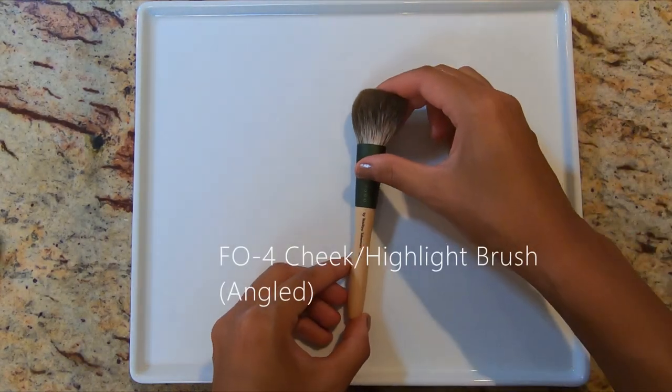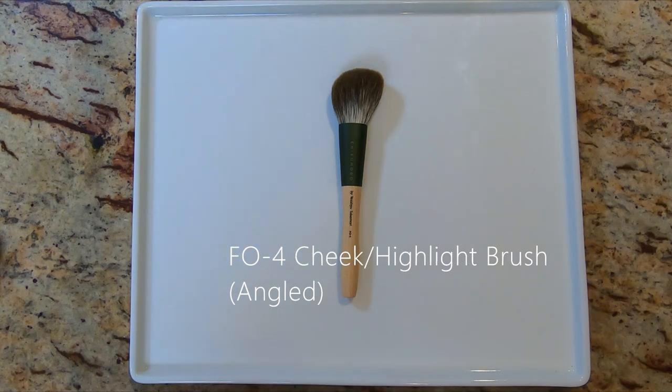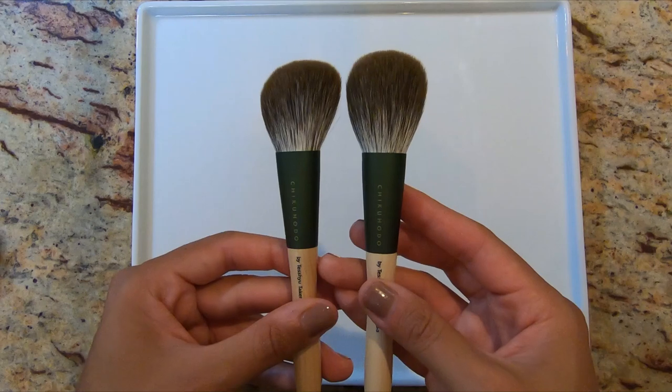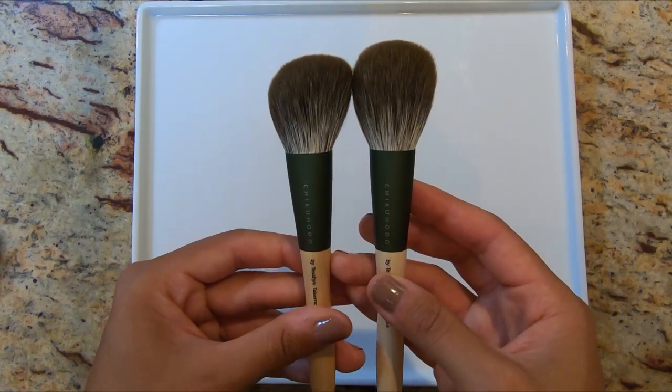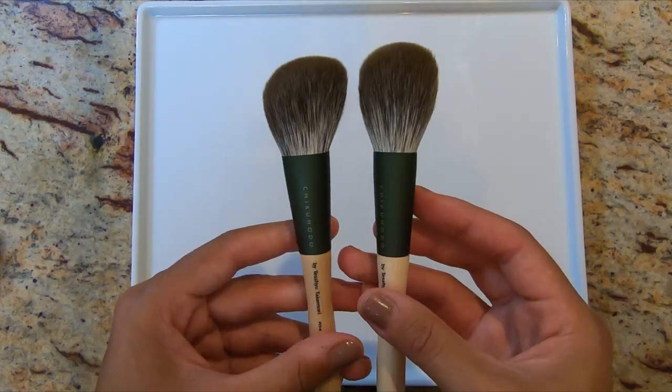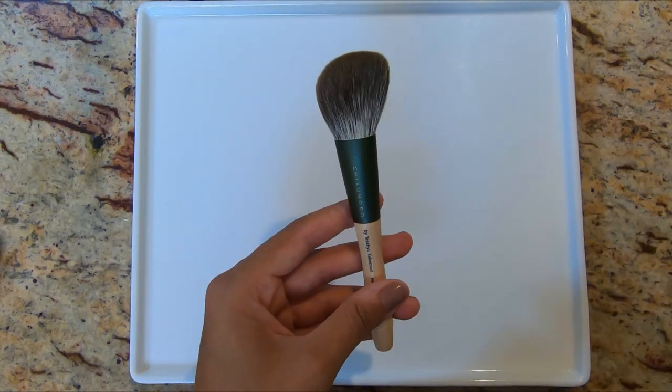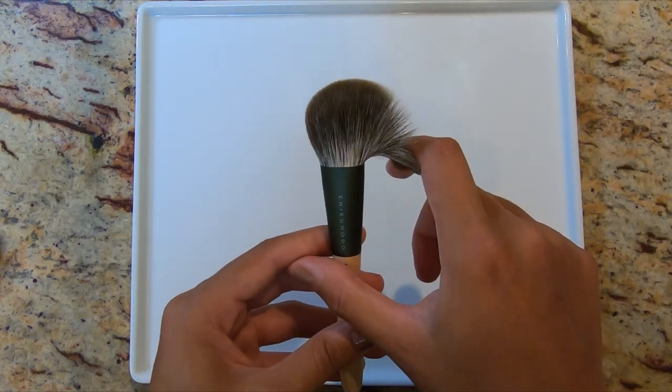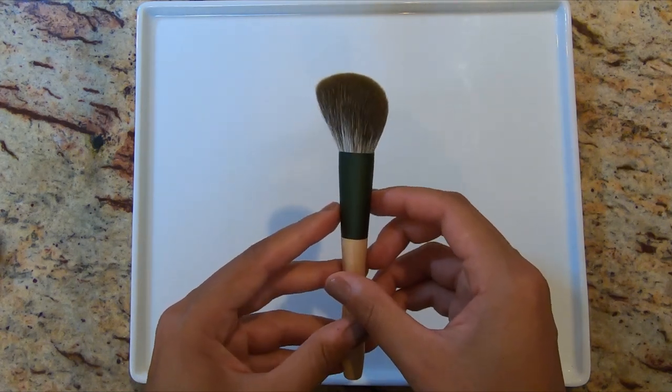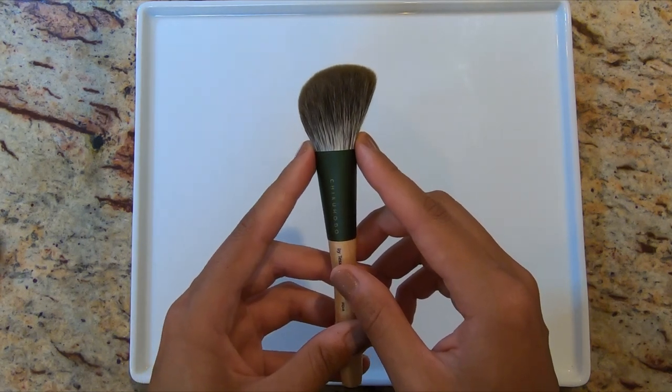Moving on to the next brush. This is the F04, also retailed for 10,000 Japanese yen. The shape of this one, it's the same oval ferrule and basically the same ferrule shape as the F03. Here they are for size comparison purposes. You can see the F04 is a little smaller in bristle length than the F03. So while they have basically the same ferrule, the F04 has an angled brush head and it's also medium density and I think a standard size for a cheek brush.